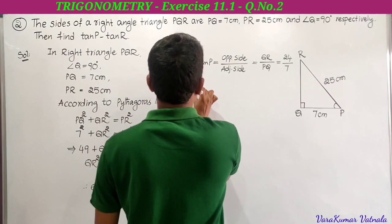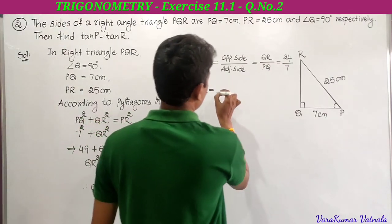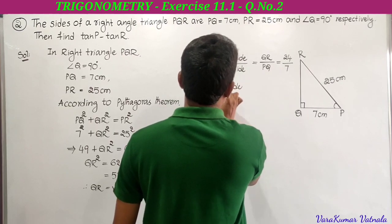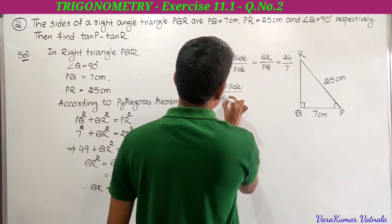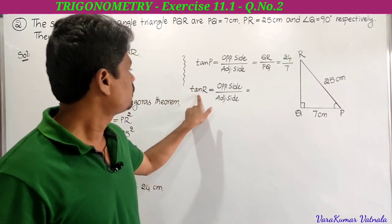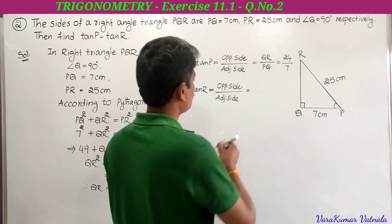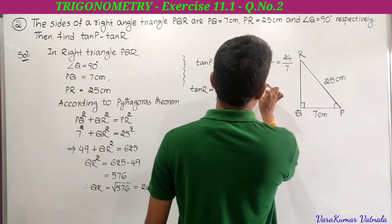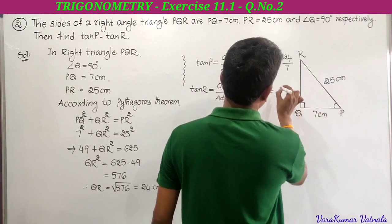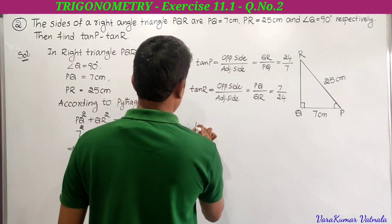He is also asking to find tan R. First find tan P and tan R, then compute tan P minus tan R. For angle R, opposite side is PQ and adjacent side is QR. So tan R equals PQ divided by QR, which is 7 divided by 24.